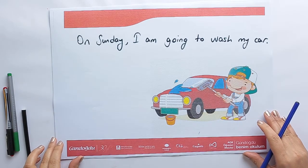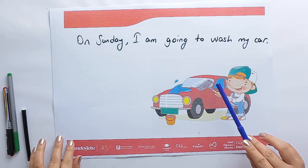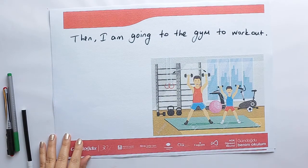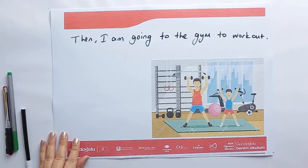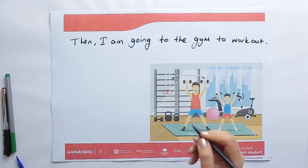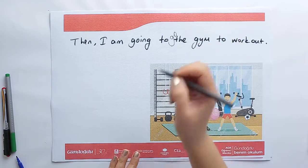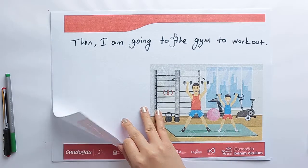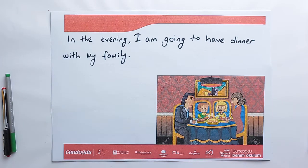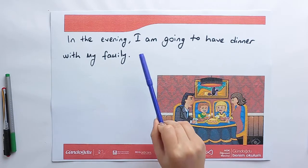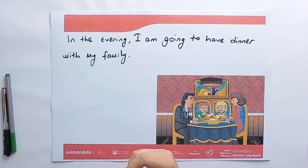On Sunday, I am going to wash my car. Then, I'm going to go to the gym to work out — here we need a verb. In the evening, I am going to have dinner with my family.